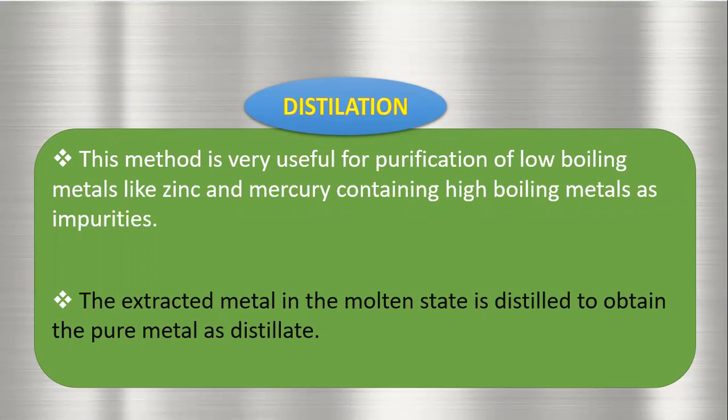Zinc, cadmium, and arsenic form vapour easily. When the crude metal is heated to a certain temperature, it starts to vaporize, and after condensing this vapour, the pure metal is obtained in the molten state. The impurities remain in the solid state and are easily separated. By this distillation method, we purify metals like zinc and mercury.